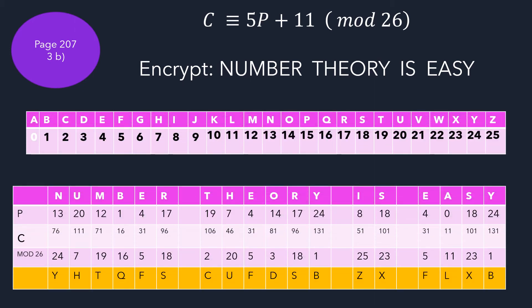let us use P values, the plaintext, that is the numerals for NUMBER THEORY IS EASY. Those alphabets in NUMBER THEORY IS EASY will be those numbers: 13, 20, 12, etc.